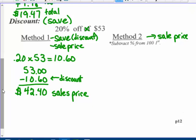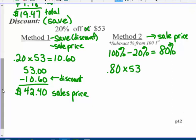Method two: subtract the percent off from 100% first. I'm not going to pay $53 for that jacket. Subtract 100% minus 20%, which means I'm going to pay 80% of $53. 80% times $53 equals $42.40, my sale price.